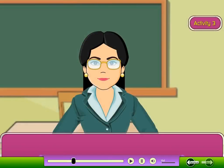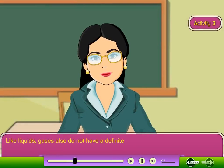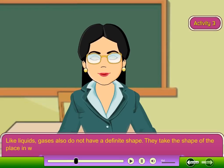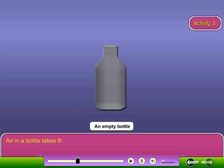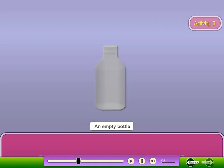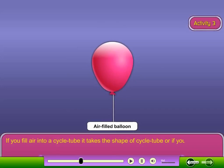Activity 3. Like liquids, gases also do not have a definite shape. They take the shape of the place in which they are present. For example, air in a bottle takes the shape of the bottle. If you fill air into a cycle tube, it takes the shape of the cycle tube. Or, if you fill air into a balloon, it takes the shape of a balloon.